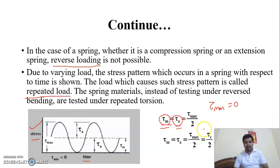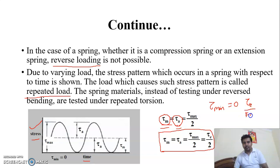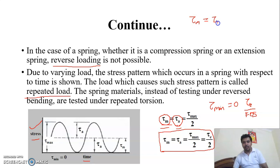For fatigue design, we design on the basis of the endurance limit. Therefore, tau maximum divided by 2 would be considered as tau_E divided by 2. Tau_E includes strength and factor of safety, so here we can include the factor of safety and divide by 2. The factor of safety is included and the final expression becomes tau_E divided by (2 × factor of safety).